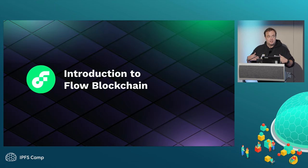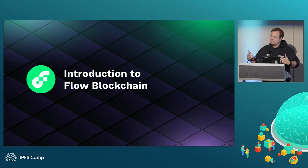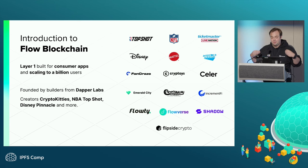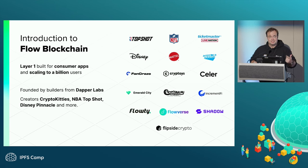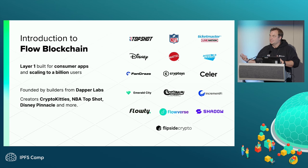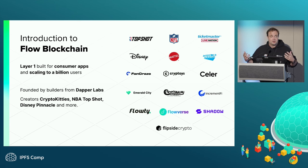Flow is a layer one blockchain for consumer applications focused on scaling to a billion users. It was founded by the builders at Dapper Labs, who initially made CryptoKitties, and have since built NBA Top Shot, Disney Pinnacle, and NFL All Day. These applications are made for consumers to engage with brands they love and be introduced to Web3 in familiar ways — using embedded wallets or credit card rails to on and off ramp.